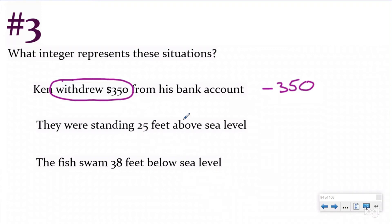They were standing 25 feet above sea level, which means you're going upwards from zero. So that's going to be a positive 25 feet. The fish swam 38 feet below sea level, right? So we're going to be going down away from zero. Below sea level means we're going to be in the negative, and that's going to be negative 38 feet. So these are my three integers that represent these three situations.